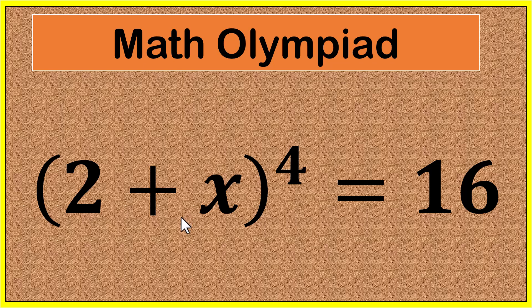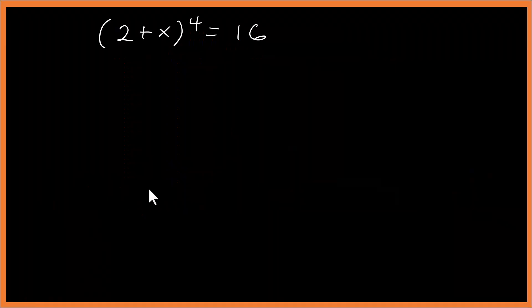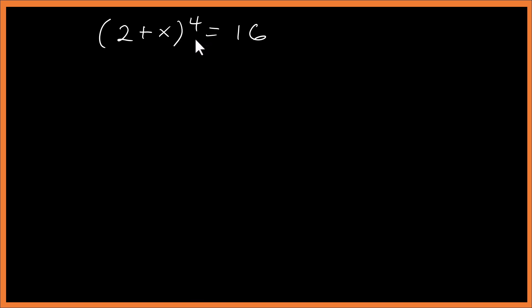Welcome to TDS online math. Let's see how we can solve this question. We are given (2 + x) to the power 4 equals 16. The path here involves making use of the structure of the equation.